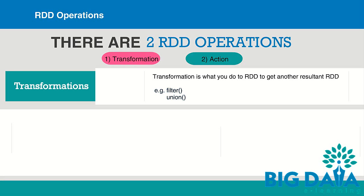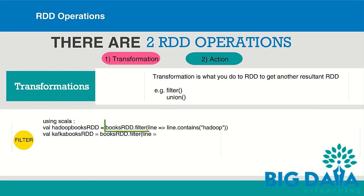Filter is a transformation that, when applied on an RDD, will isolate certain elements and create a new RDD. For example, applying filter on a books RDD to filter out only those books that contain the Hadoop keyword in it.